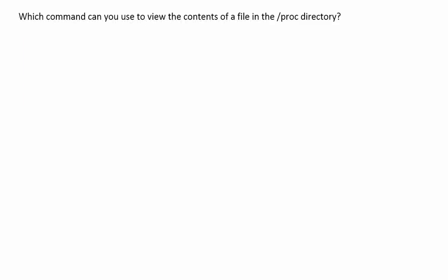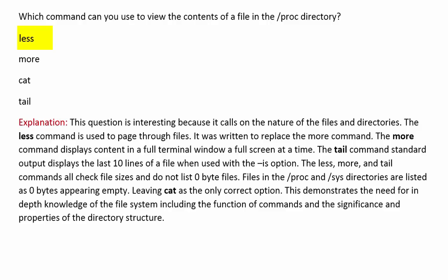Which command can you use to view the contents of a file in the /proc directory? This question calls on the nature of the files and directories. The less command is used to page through files and was written to replace the more command. The more command displays a full terminal window at a time. The tail command displays the last 10 lines of a file with the -f option. The less, more, and tail commands all check file sizes and do not list 0-byte files. Files in the /proc and /sys directories are listed as 0 bytes, leaving cat as the only correct option.